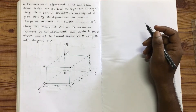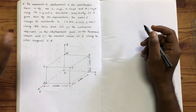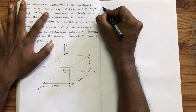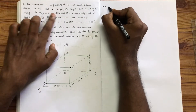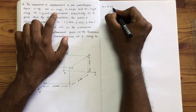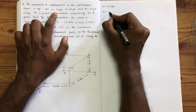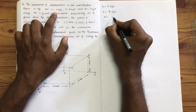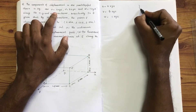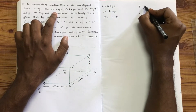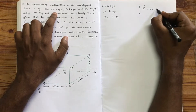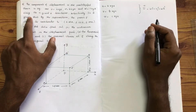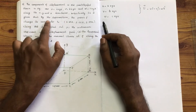The components of displacement in the parallel pipette shown in the figure are: u is equal to A into xyz, v is equal to B into xyz, w is equal to C into xyz. The displacement field is u·i plus v·j plus w·k, along x, y, z directions respectively.